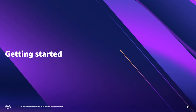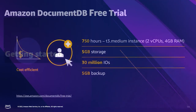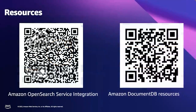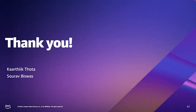Thanks, Karthik, for the wonderful demo and architecture. I hope our audience learned a lot from this. Before we conclude, let's look at some resources on how to get started. If you're interested in this architecture and want to try it out, you can always use our free tier — 750 hours of a t3.medium instance, 5 gigabytes of storage, 30 million IOPS, and 5 gigabytes of backup, all free for a month. There's also a blog that discusses this process in detail — find it on the QR code on the left side of the screen. We also have release notes and documentation. Look up the QR code on the right side of the screen, and do reach out to us at the channels shown. Thank you so much for today's session.